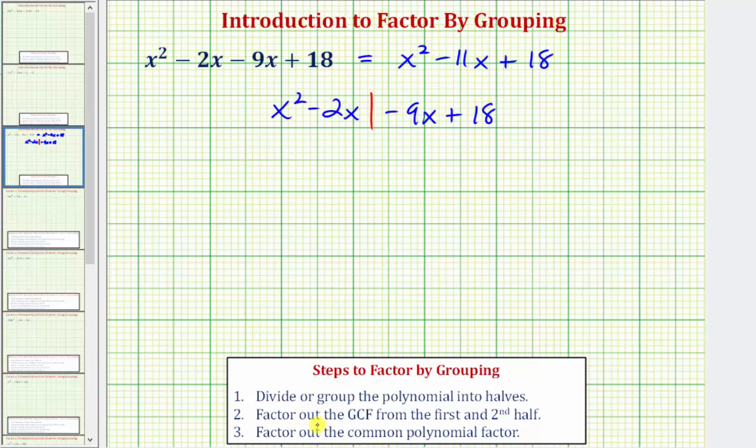Step two, we factor out the greatest common factor from the first and second half. Looking at just these first two terms, notice how the greatest common factor would be x. So we'll factor out x just from the first two terms, so we'd have x times the quantity (x - 2).